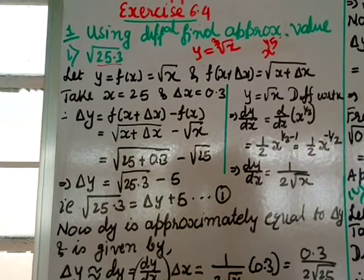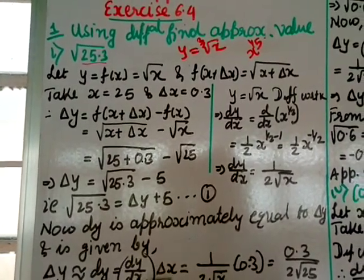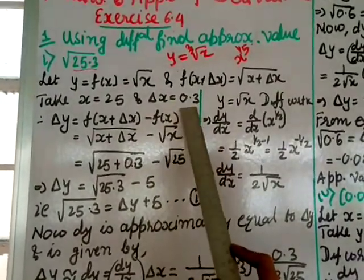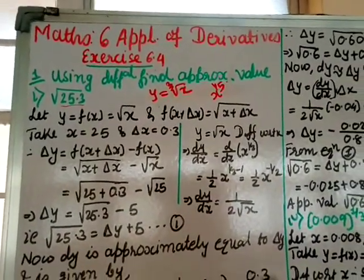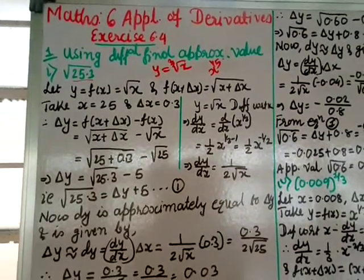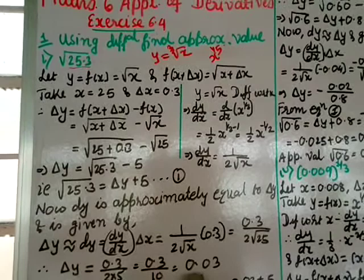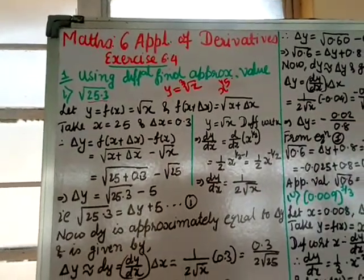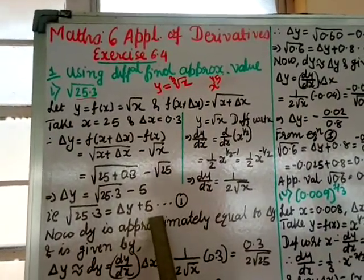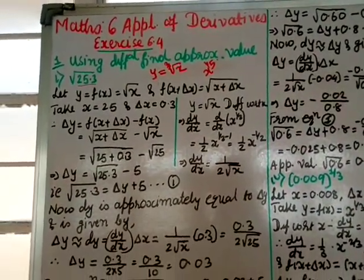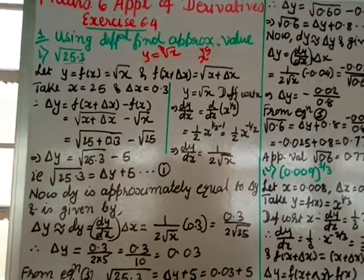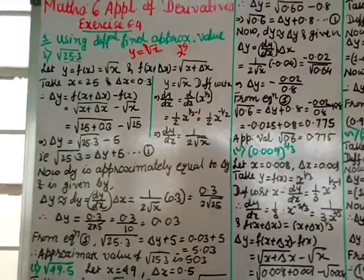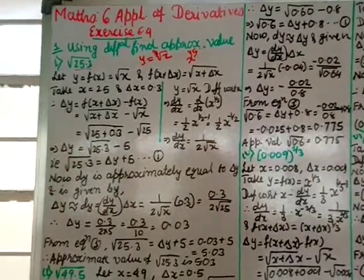We know that dy ≈ δy, and δy ≈ dy = (dy/dx)·δx. Substituting dy/dx = 1/(2√x), δx = 0.3, x = 25: δy = (1/(2×5)) × 0.3 = 0.3/10 = 0.03. Putting δy = 0.03 in equation 1: √25.3 ≈ 0.03 + 5 = 5.03.